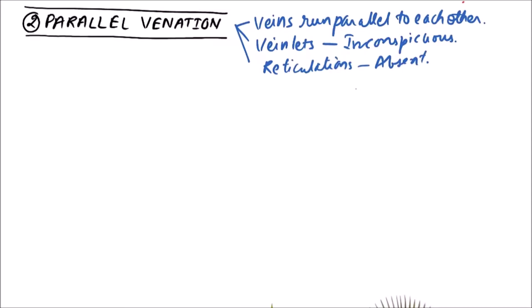The common examples include the monocots. There are some exceptions in monocots which are not having the parallel venation.